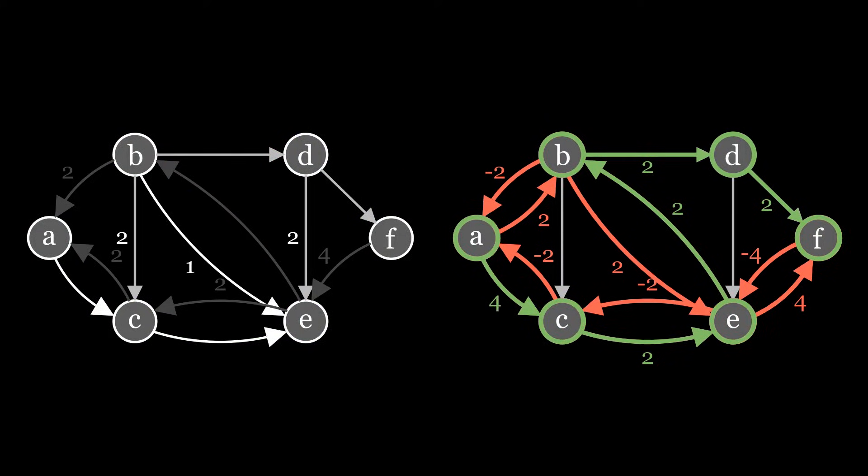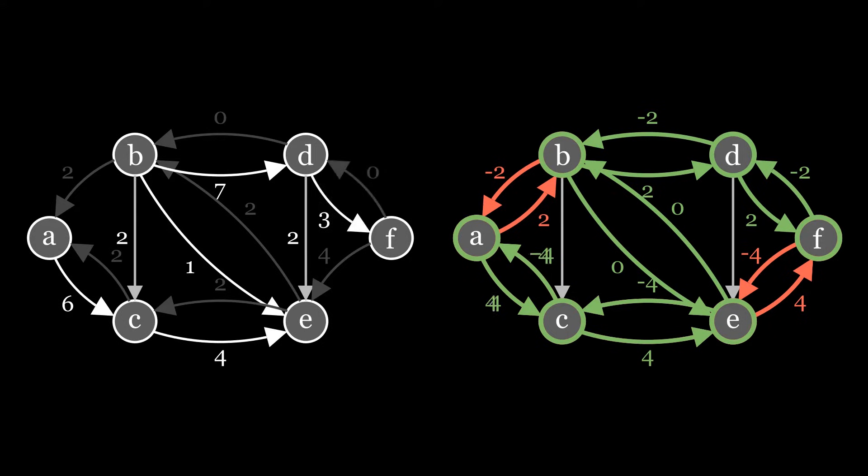We add this new flow to the previous one and add backward edges. Now we compute the residual graph.